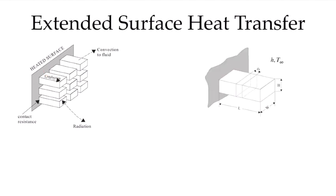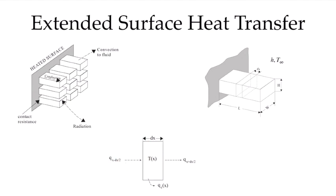When we look at a problem, I'll pick a geometry where the fin has a length L. I'll say it's a rectangular cross-section with a width and a height. To derive our equation, we're going to look at a small piece — a little chunk of length dx. There's a known convection coefficient and ambient temperature surrounding this fin. Looking at a small control volume, we have the temperature at that location, the extent dx, and convection coming in at this boundary, which is a distance dx over 2 from the center of the volume. We have conduction coming in, and conduction leaving the volume at a distance x plus dx over 2.